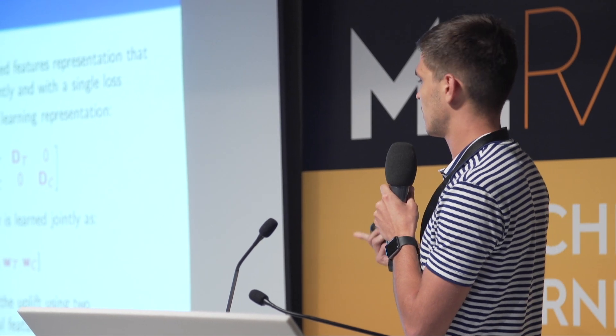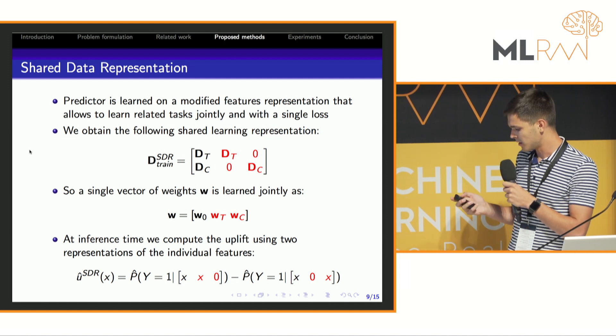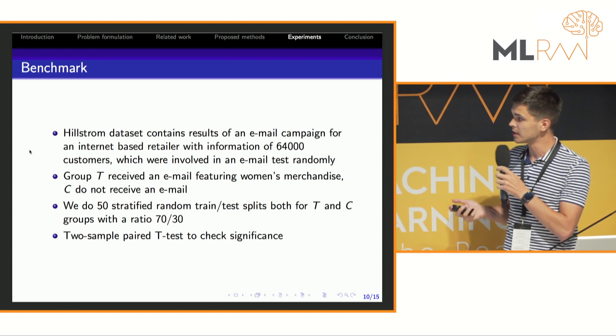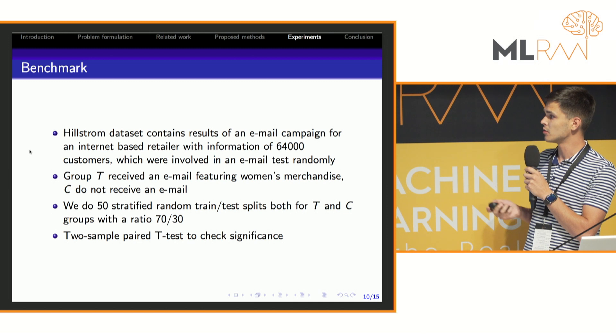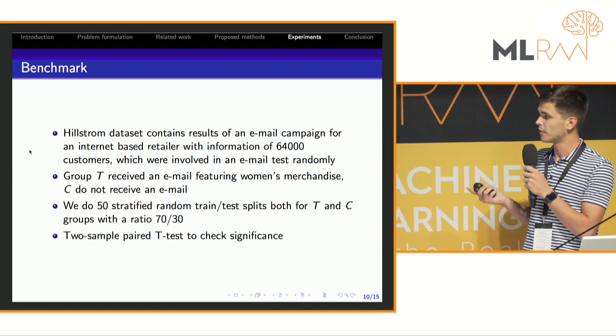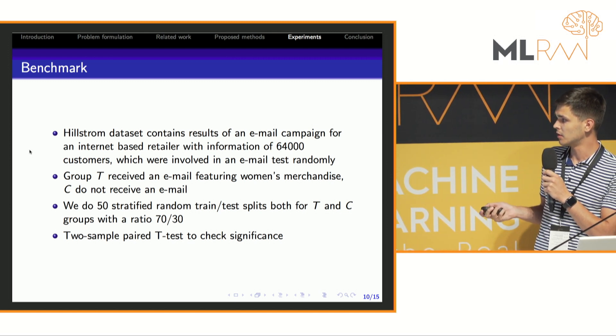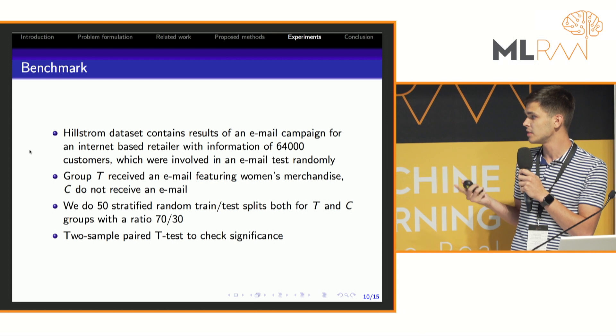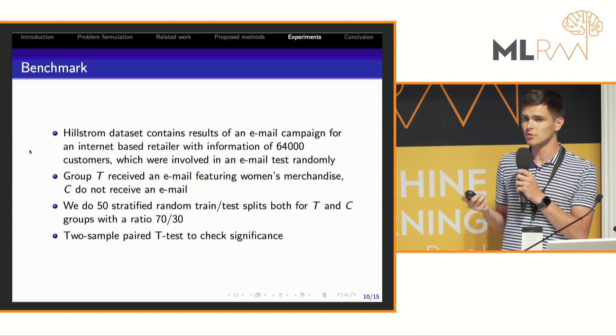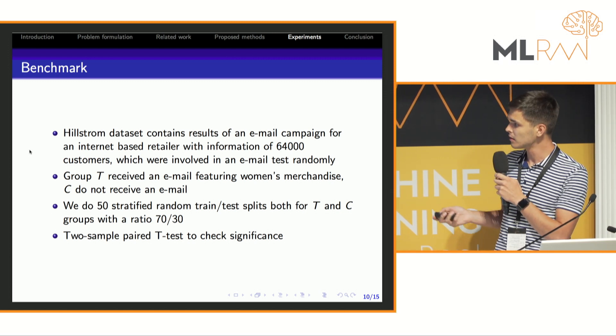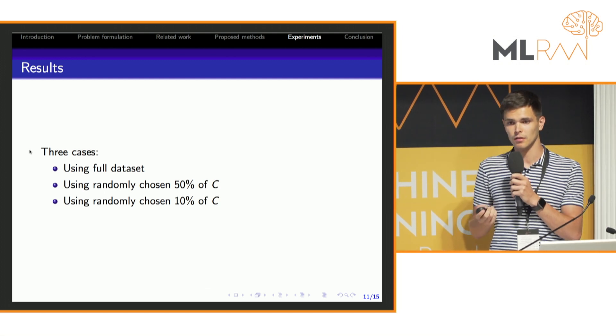For our task, we decided to use a dataset which contains results of an email campaign from one internet-based retailer. Group T received an email featuring women's merchandise and group C didn't receive an email. We also did 50 stratified random train-test splits and covered different cases with balanced and imbalanced groups T and C.